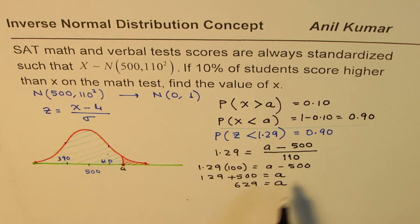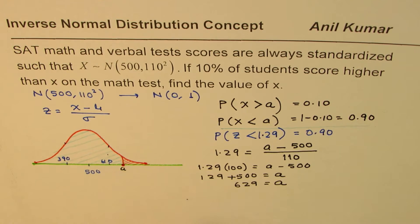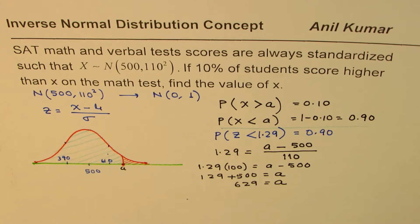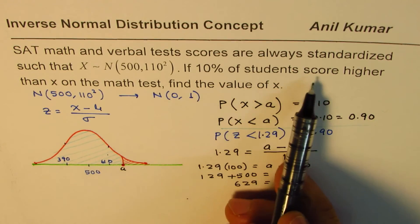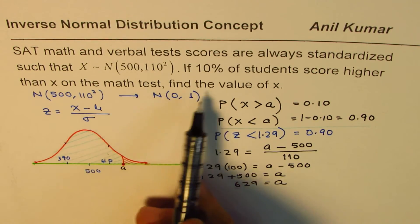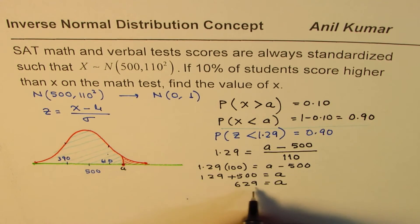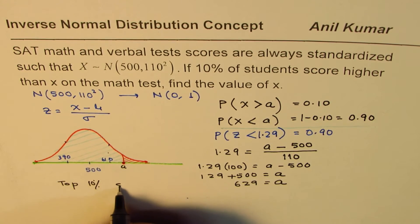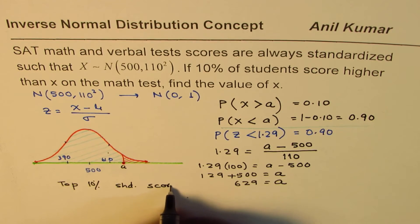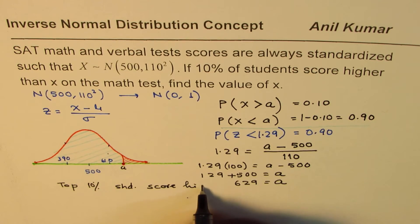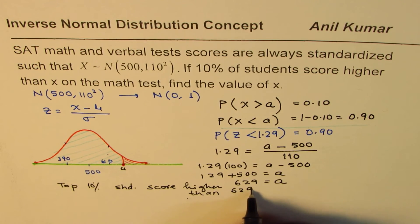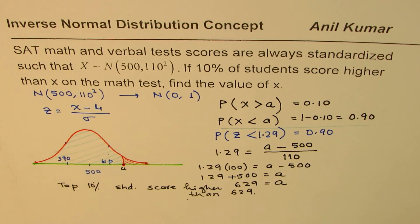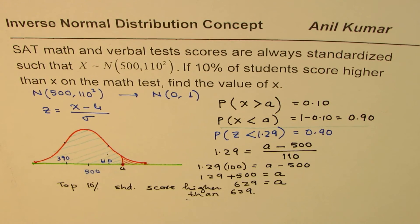That is to say that if you score 641, you are in the top 10%. So that is how we can solve such a question. If 10% of students score higher than x on the math test, find the value of x. We get the value of x should be, so the top 10% should score higher than 641. I hope you understand the whole concept. Anil Kumar, you can always share and subscribe to my videos. Thank you and all the best.